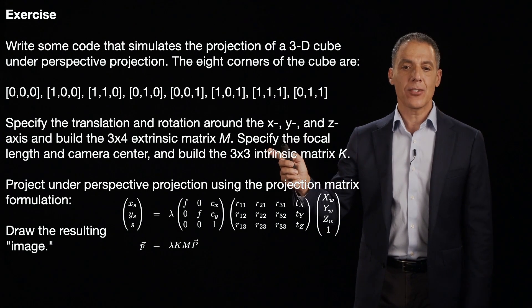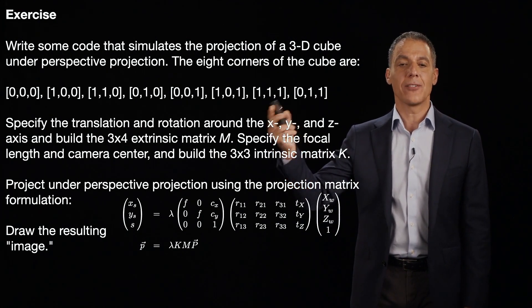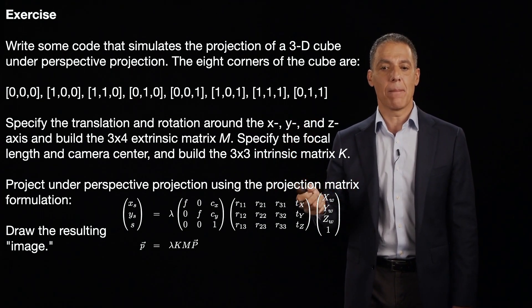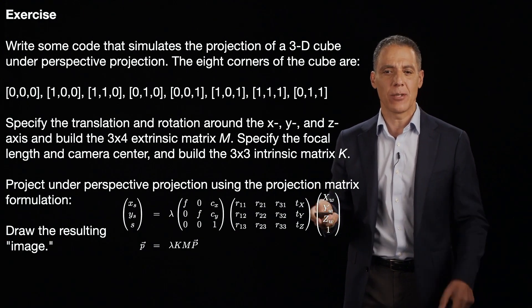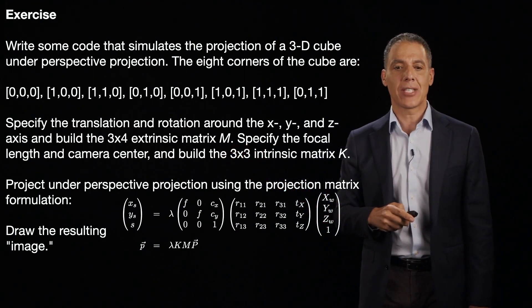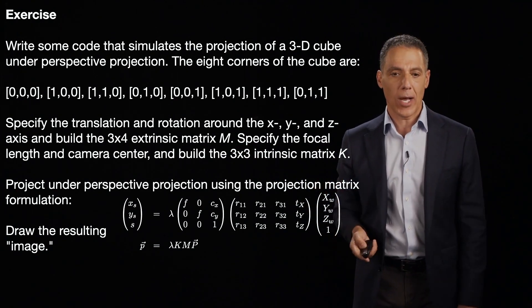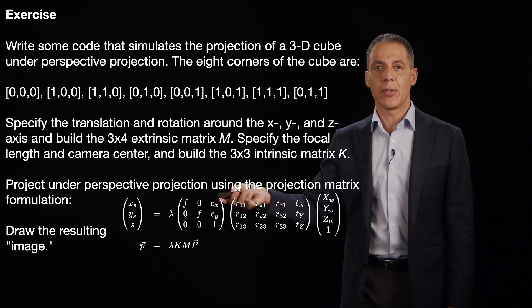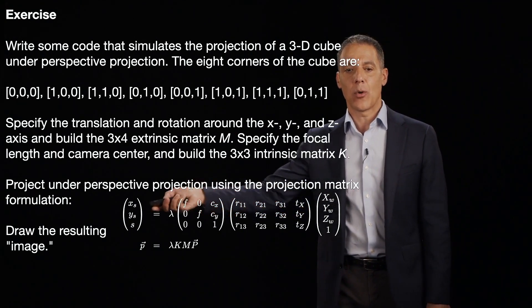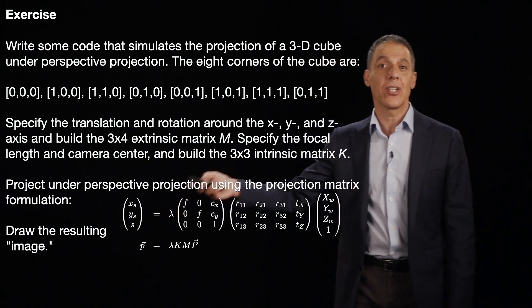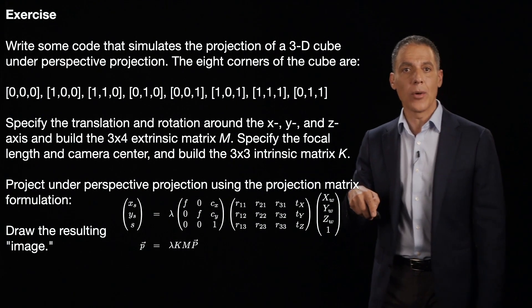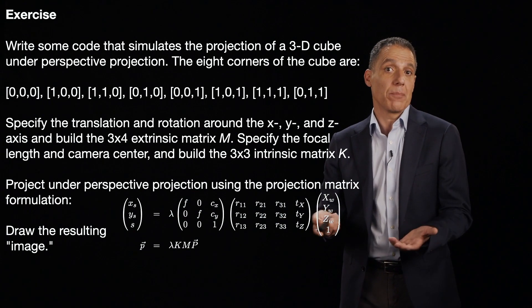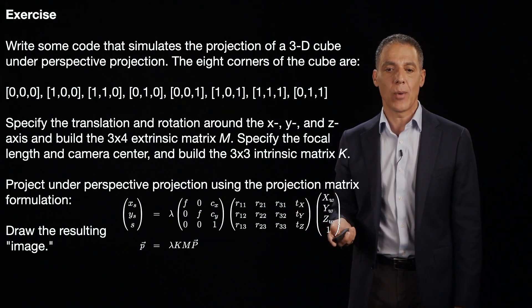Now, specify the translation and rotation around the X, Y, and Z axes in the world and build the 3 by 4 extrinsic matrix M. Now, I haven't shown you how to build the rotation matrices yet, but I'll show you that in a minute. And then build the intrinsic matrix K with whatever focal length you want. Project under this projection and then you're going to plot everything. And you should see a prospectively projected cube if everything went well.